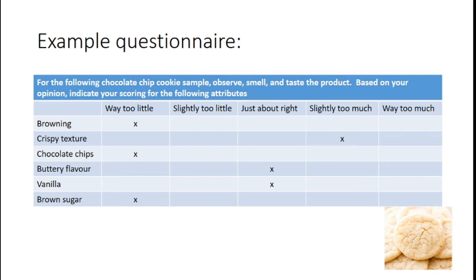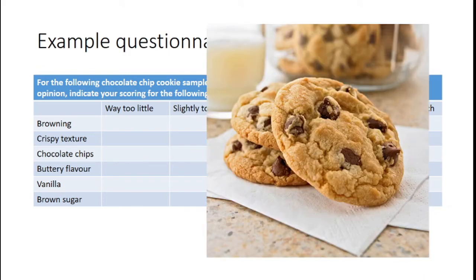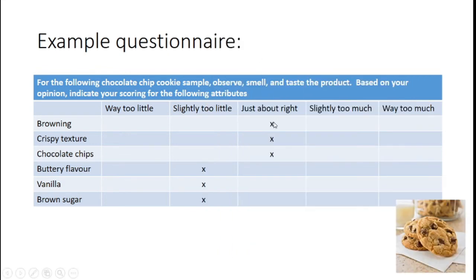We can take each attribute and use our formulation and food science skill set to say we can dial this up or dial this down. Moving to the next iteration — a much better chocolate chip cookie — now browning is just about right, crispy texture just about right, chocolate chips just about right, but slightly too little buttery flavor, vanilla, and brown sugar. You iterate back and forth with these results.